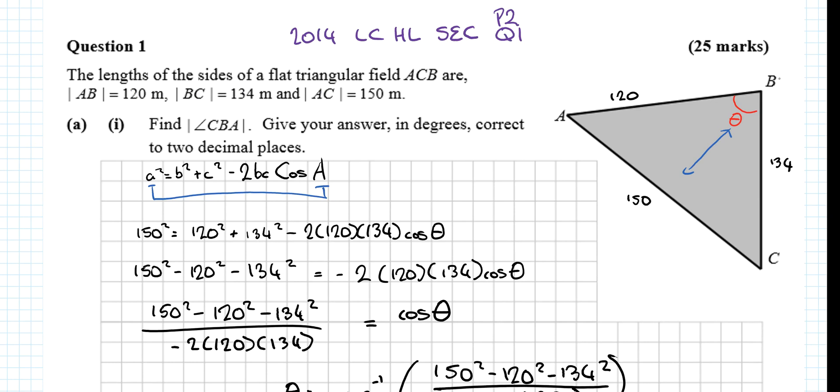Find angle CBA. So that's this angle here, going from C to B to A, so this angle up there. The first question you should ask yourself is, what kind of triangle is it? Is it right-angled? No, it's not right-angled.